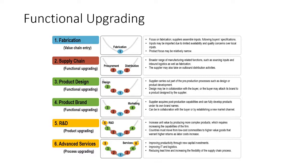Look at the color coding. We have fabrication as the entry into the value chain, then the supply chain. Once you have a product or an idea, there comes procurement and distribution. Product design is a functional upgrading procedure that allows organizations to realize whether a product meets the guidelines of the market. Designs may be incorporated in collaboration with the buyer, or the buyer may attach its brand to a product designed by the supplier.